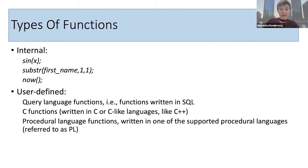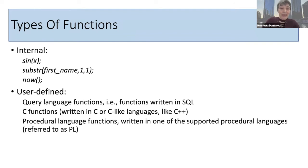There are two types of functions. First are internal functions, which are pretty much like functions in C or Java — mathematical functions, string functions, time functions. Then there are user-defined functions, which can be written in query languages like SQL, in C or C-like languages, or in procedural languages such as PL/Python and many others. In today's presentation, we'll be talking solely about functions written in Postgres's procedural language: PLPG/SQL.